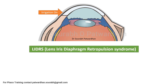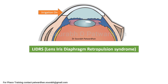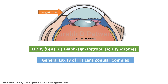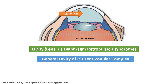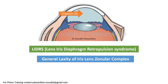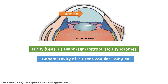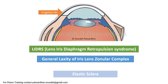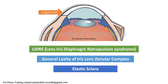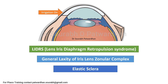One of the common causes for this is LIDRS, or Lens Iris Diaphragm Retropulsion Syndrome, which occurs because of reverse pupillary block. But it can also occur when there is generalized laxity of the iris-lens-zonular complex, which may lead to more deepening of the anterior chamber with pressure. It is also seen in younger patients with elastic sclera, and in patients where scleral thinning has occurred.